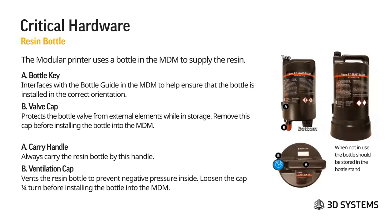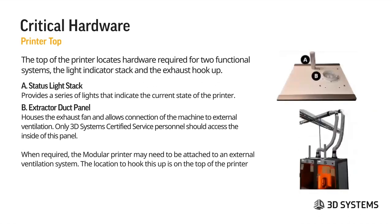The resin bottle has a key at A to align it into the bottle chute, lining up both the chip and the coupler. There's a valve cap at B — be sure to remove this cap before installing the bottle into the MDM or it will not lock. When not in use, place the bottle upright in the stand and replace the cap. From the top, there is a carrying handle — always carry the resin bottle by this handle. There is also a ventilation cap; before installing your bottle, loosen this cap about a quarter turn so the bottle is vented and doesn't collapse during pumping.